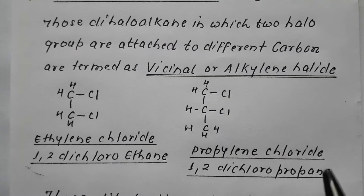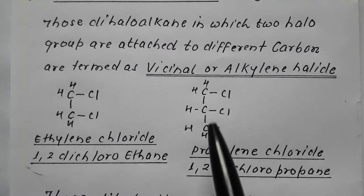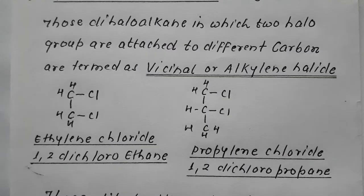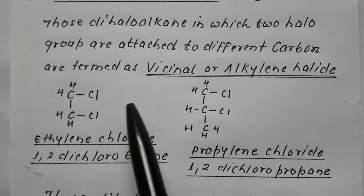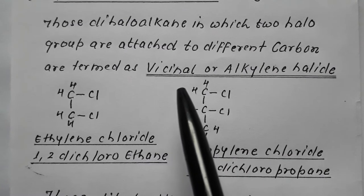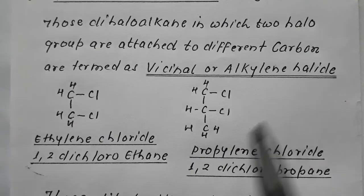This is termed as propylene chloride — chloro at position 1 and chloro at position 2, giving 1,2-dichloropropane. Those dihaloalkanes in which halo groups are attached to different carbon atoms are termed as vicinal or alkylene halide.